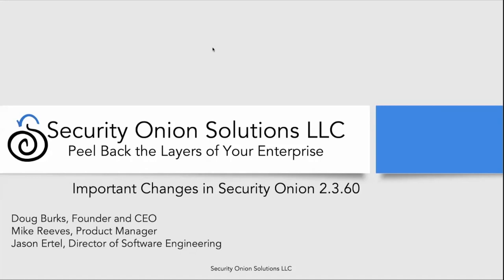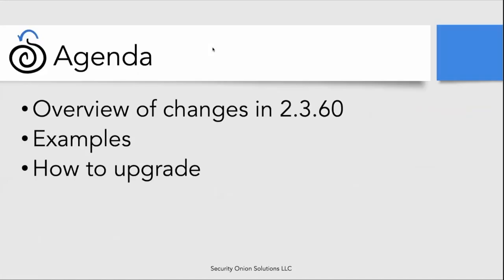This is Doug Burks with Security Onion Solutions, and we're going to talk about some important changes in Security Onion 2.3.60. Joining me today is our product manager, Mike Reeves, and our director of software engineering, Jason Ertl. In this presentation, we're going to talk about the changes in Security Onion 2.3.60, some examples you need to be aware of, and how you can upgrade to get the latest and greatest version of Security Onion.